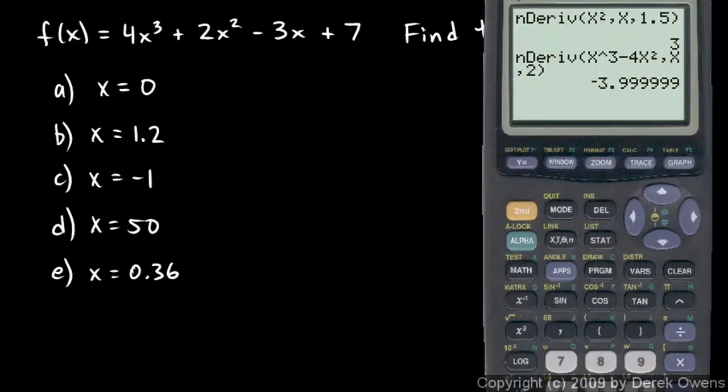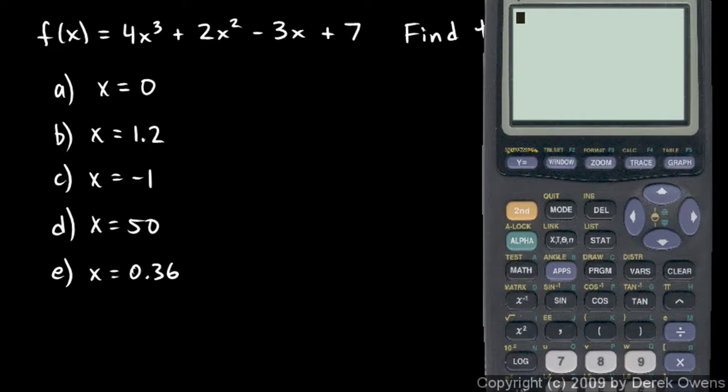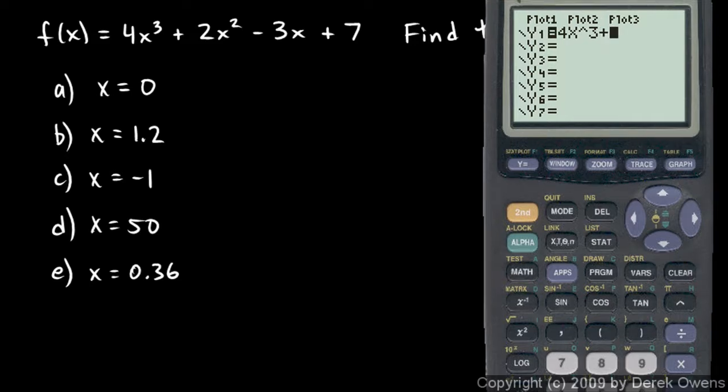Now, I'll show you another thing you can do here. Let me clear this out. Instead of just going straight to math 8 and typing in this function, I'm going to do this. I'm going to hit the y equals key up here, and I'm going to put in this function for y1. So, let's type 4x cubed plus 2x squared minus 3x plus 7.